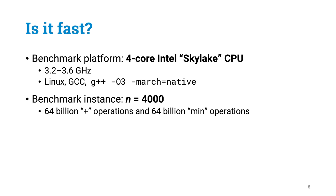And if you check the numbers, you can see that the total number of additions and the total number of minimum operations that we are going to do for n equals 4000 is roughly 64 billion. So how long does it take to do all of these 64 billion operations?